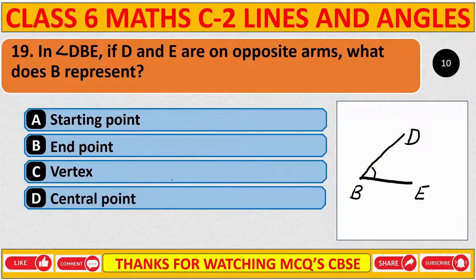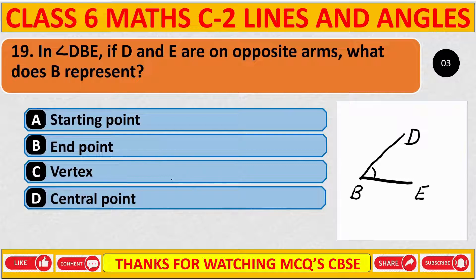In angle DBE, if D and E are on opposite arms, what does B represent? The correct answer is C: vertex.